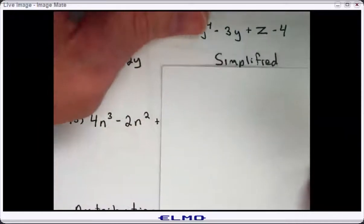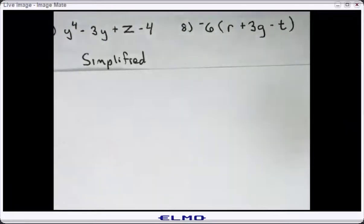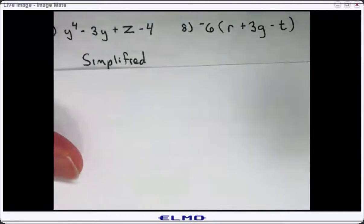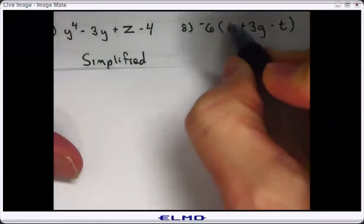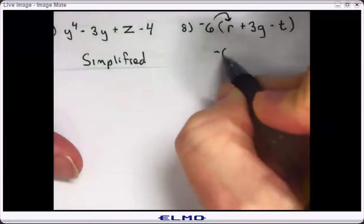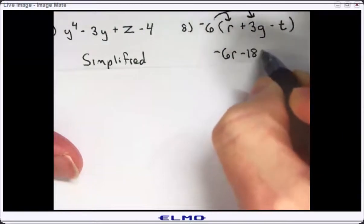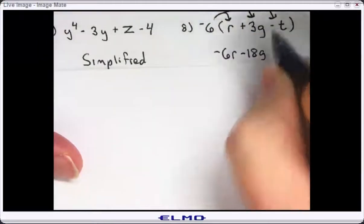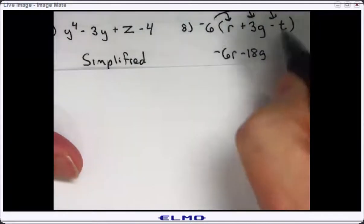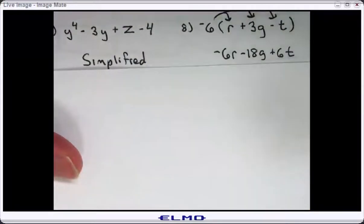Now would be a great time if you would like to pause the video and try to work the rest of them out before I do, then restart the video to check your answer. But I'm going to keep going straight through. I don't have anything I can do inside the grouping — there are no like terms — so I'm ready to distribute. Negative six times r is negative six r. Negative six times three g is negative 18g. And negative six times negative t — same sign positive — I get positive six t. My answer contains three terms.